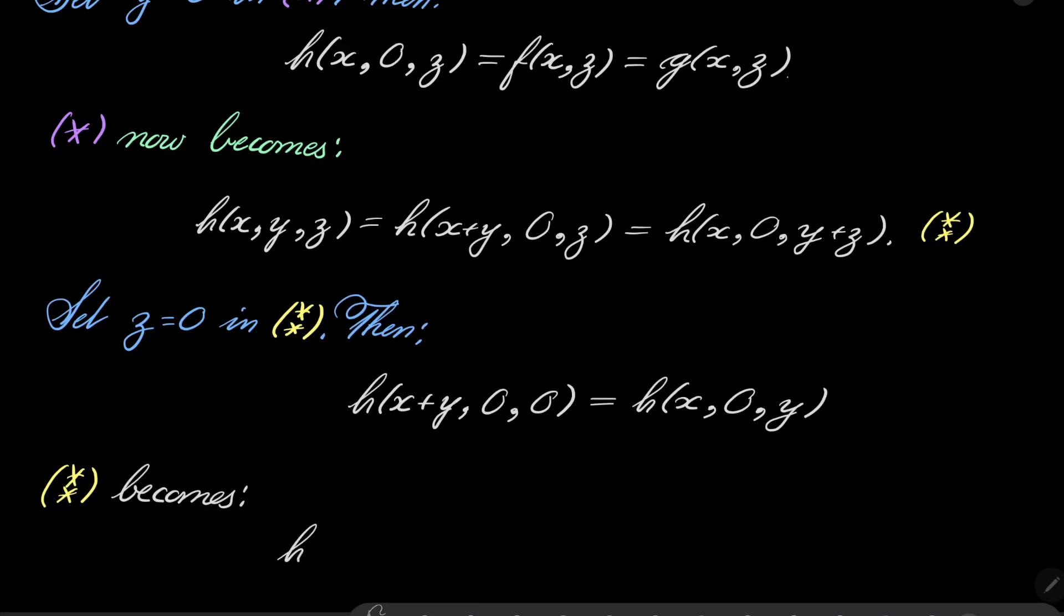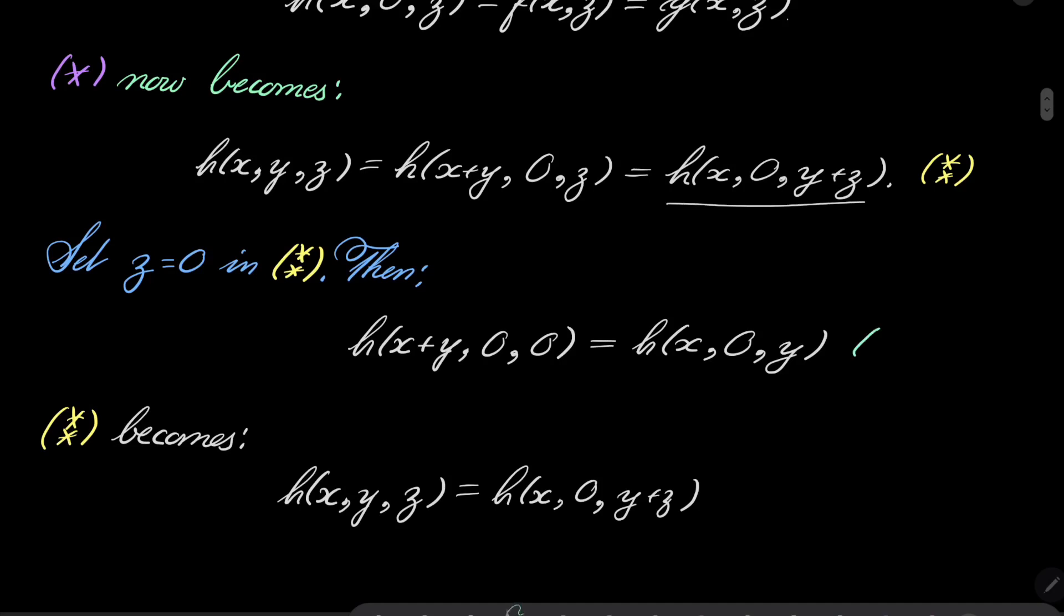h(x,y,z). And now instead of this part, which is h(x,0,y+z), by our condition which I will mark triangle, by condition triangle, we can put y+z in the first argument. So it's h(x+y+z,0,0). All right.